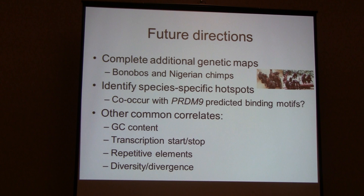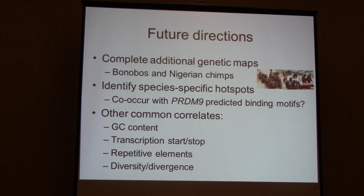This is just one picture, and we'd like to increase the number of comparisons by finishing the genetic maps for the Nigerian chimp population and the bonobo population. That will allow us to identify species-specific hotspots and look at whether PRDM9 predicted binding motifs co-occur with hotspots and explain variation in these other species — especially given the distinct difference between the human and chimp lineages. We'd also like to examine other genetic elements commonly correlated with recombination rate variation.